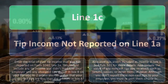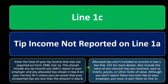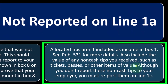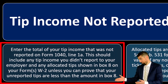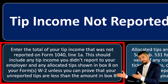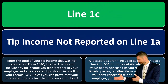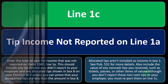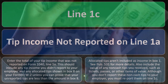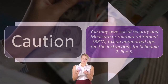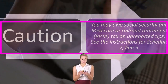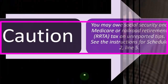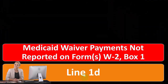Also include the value of any non-cash tips you receive, such as tickets, passes, or other items of value. The whole point of a tip is that you're receiving value directly for work done, which is hard for the IRS to track — but in theory you should still report it. So even if a tip was in the form of concert tickets, you should report that as income. Although you don't report non-cash tips to your employer, you must report them on Line C. Caution: you may owe Social Security and Medicare or Railroad Retirement (RRTA) tax on unreported tips — see the instructions for Schedule 2, Line 5.